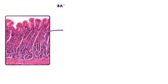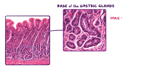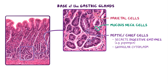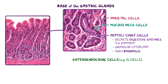At the base of the gastric glands, parietal cells and mucus neck cells are still present, but the base also has very prominent peptic or chief cells, which are responsible for secreting digestive enzymes such as pepsinogen. These cells have a granular cytoplasm and are very basophilic, resulting in their dark purple appearance. Enteroendocrine cells such as G cells are also present at the base, responsible for secreting hormones including gastrin, though they aren't easily identified with an H&E stain.